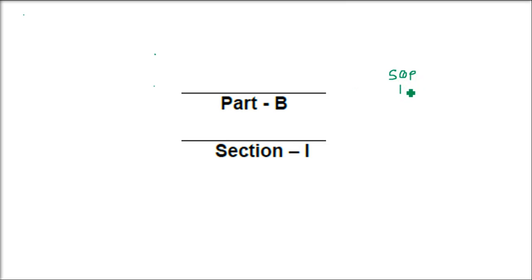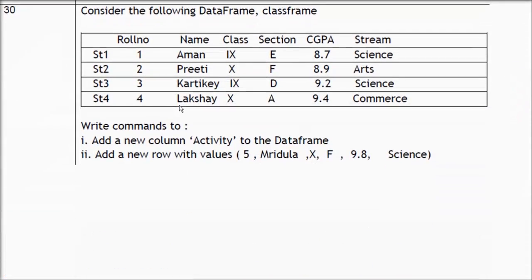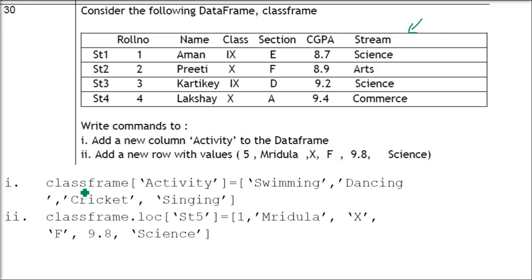This is the 2021 sample question paper of Informatics Practices released by CBSE. Part B, Section 1: consider the following data frame called 'class_frame'. We have to write the commands to add a new column called 'activity' to the data frame.